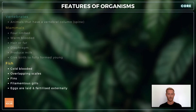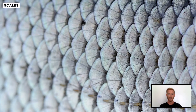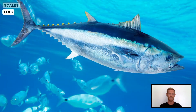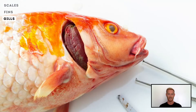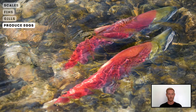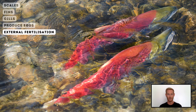Fish are cold-blooded vertebrates, meaning they have no internal mechanism for temperature control. Their bodies are covered with overlapping scales, they have fins for movement, and breathe using filamentous gills protected by a bony plate called the operculum. Fish reproduce sexually but fertilization is usually external, meaning the male sheds sperm over the eggs after they've been laid.